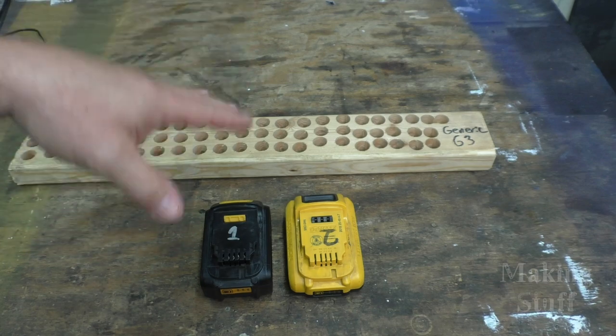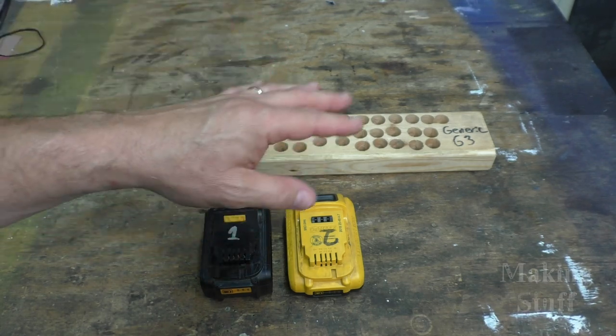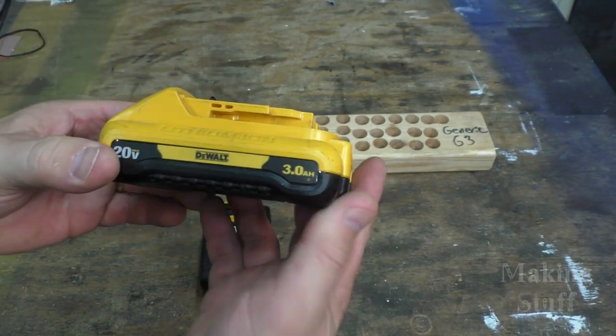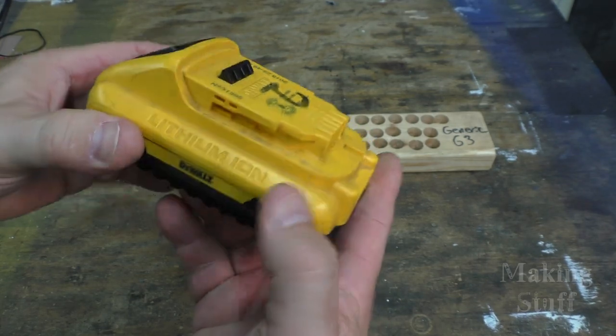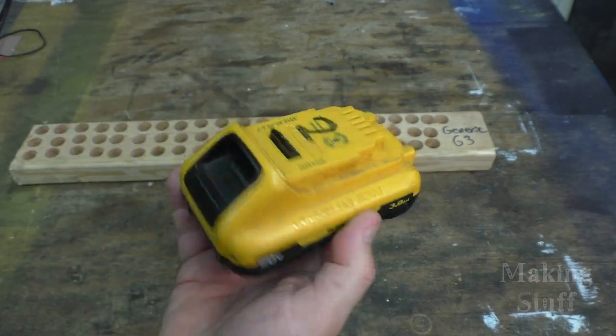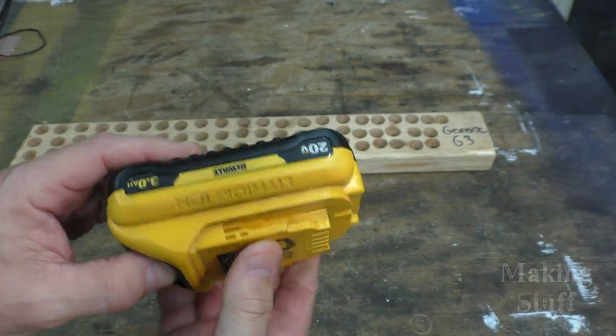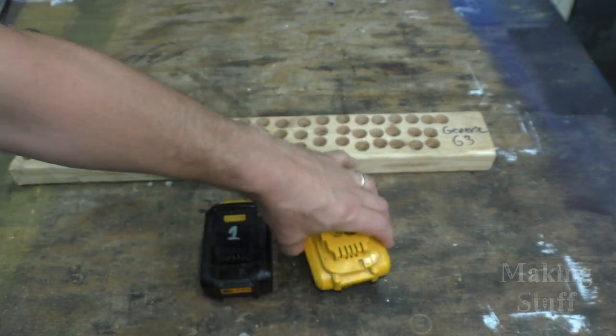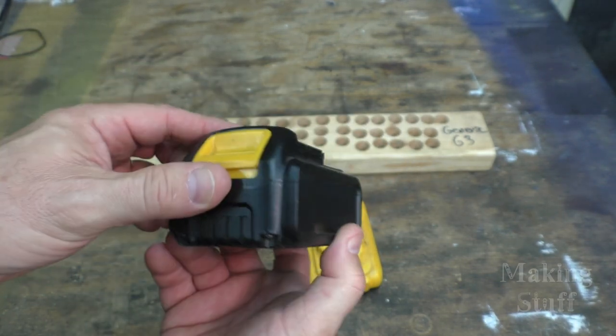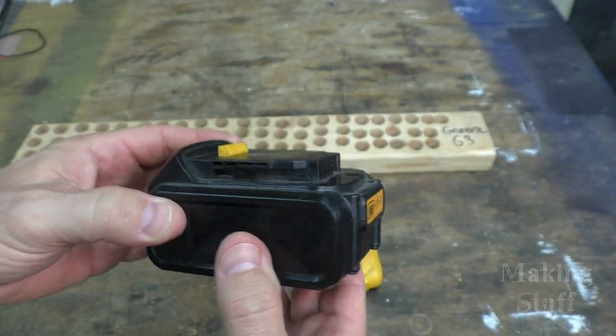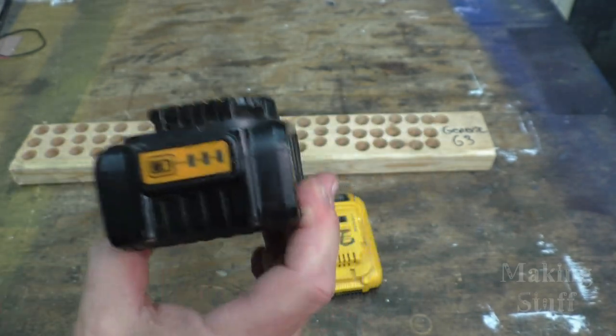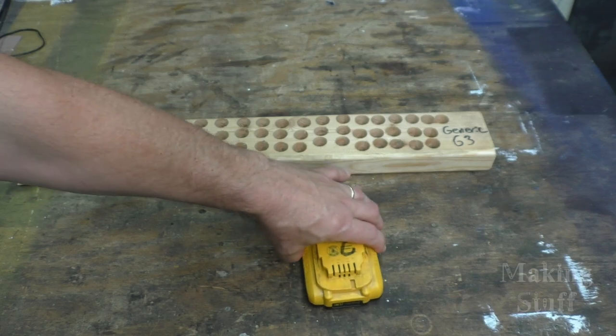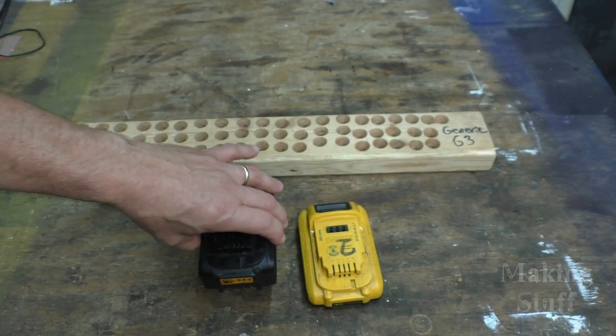So now the question is which one lasted longer? Well, I'll tell you the DeWalt three amp hour name brand battery lasted 23 charges, which kind of shocked me. I thought it would last longer. And that's a complete charge and discharge on the same drill. How many did the generic one last? This one lasted 28 charges. So I got five more charges out of the generic one than I did the name brand DeWalt. But the story's not over right there.